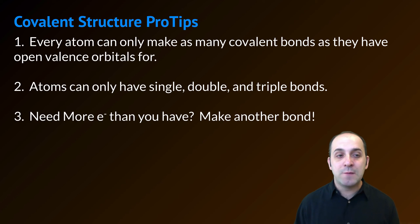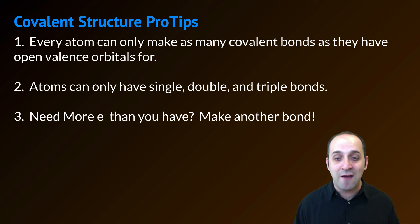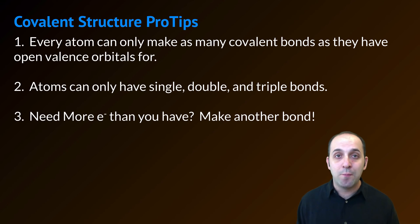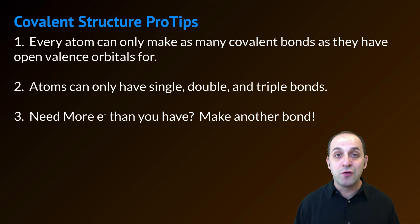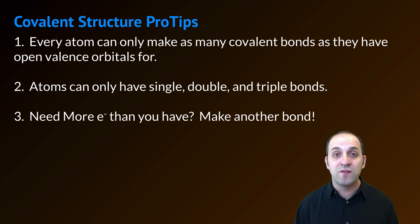My final tip is that if you ever need more valence electrons than you actually have, you have to make an additional covalent bond. That's really the only way that you're going to be able to draw a structure where everybody has the total number of valence electrons that they need if it seems like you need more electrons than you have access to.